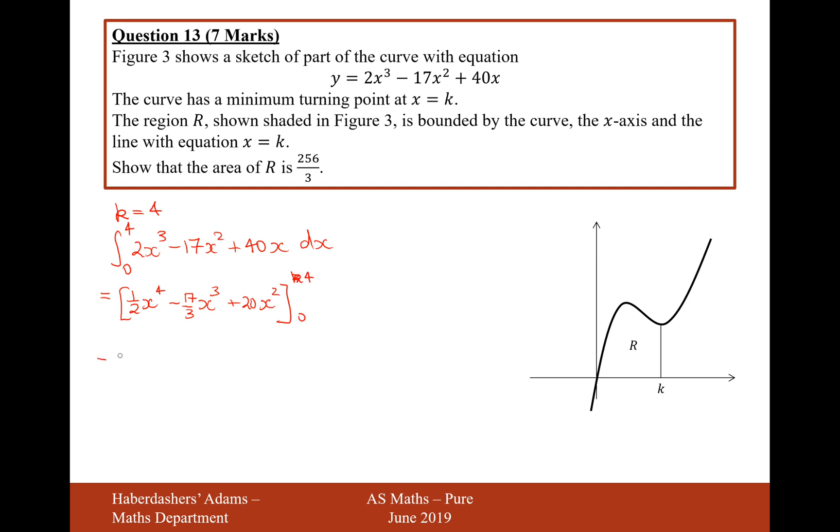So, let's now substitute 4 in and then substitute 0 in. So, it's going to be half of 4 to the power of 4 minus 17 over 3 times 4 to the power of 3 plus 20 times 4 to the power of 2 minus... And then substituting 0 in will just give you 0.